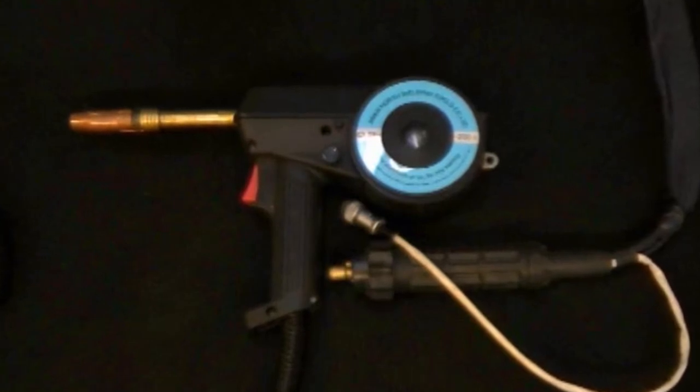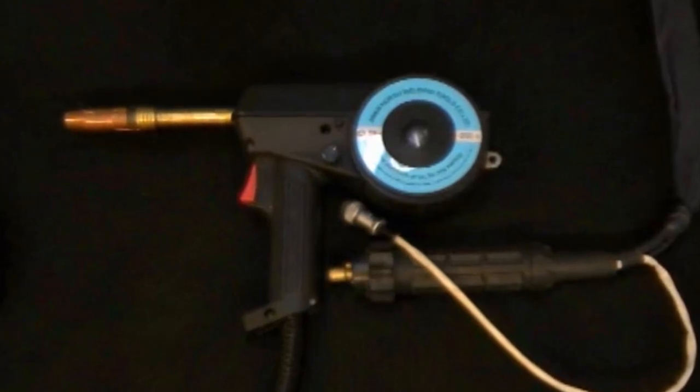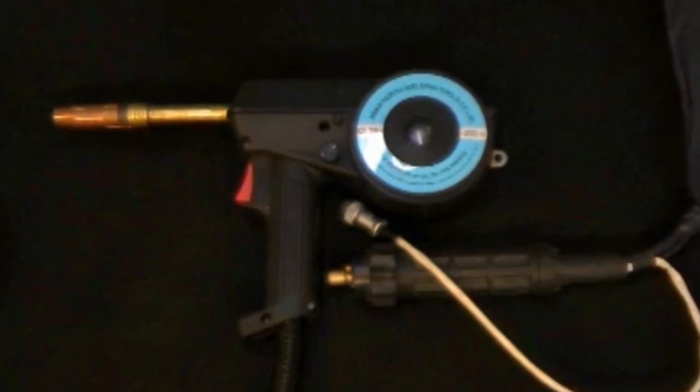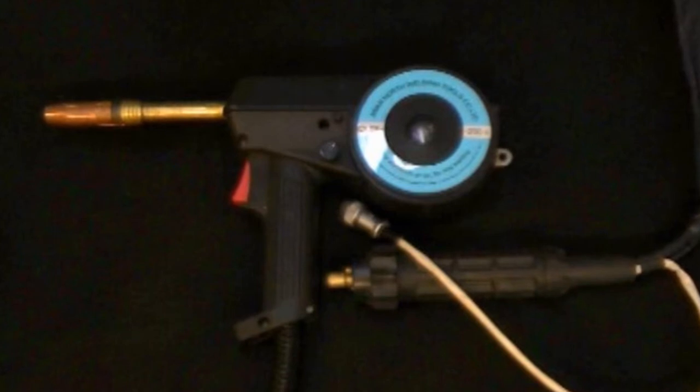Welcome to a new edition of the Everlast Power video series. In this edition we will feature the Everlast SN200 spool gun to demonstrate basic spool gun components and setup to weld aluminum.